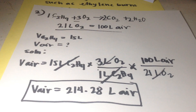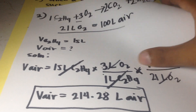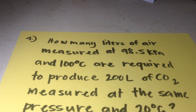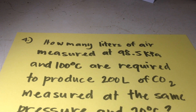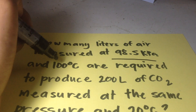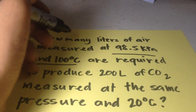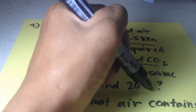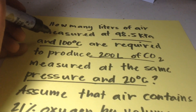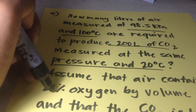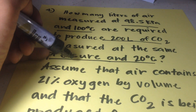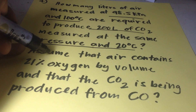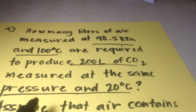Now for problem number 4: how many liters of air measured at 98.5 kilopascal and 100 degrees Celsius are required to produce 200 liters of carbon dioxide measured at the same pressure at 20 degrees Celsius? Assume air contains 21% of oxygen by volume, and that the carbon dioxide is being produced from carbon monoxide. First, we need to write the reaction.